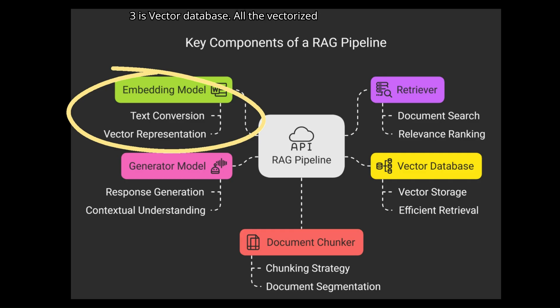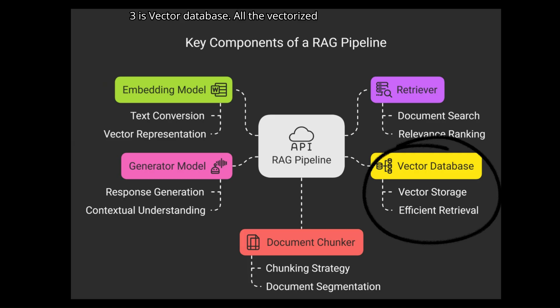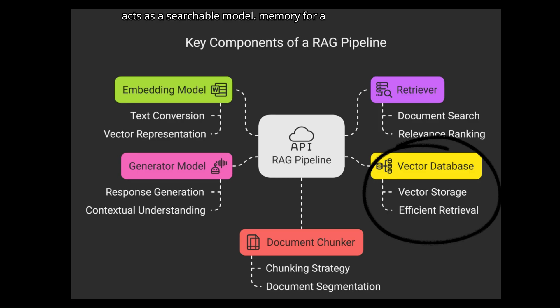Step 3 is the Vector Database. All the vectorized chunks are stored in a vector database like FAISS, Pinecone, or Chroma. This acts as a searchable memory for the knowledge base.